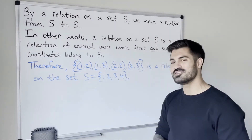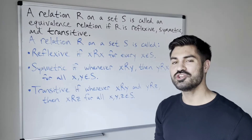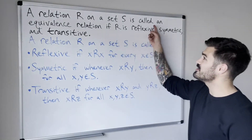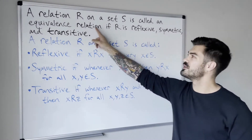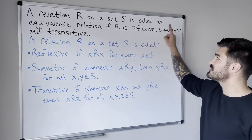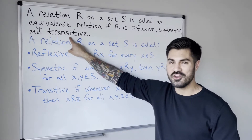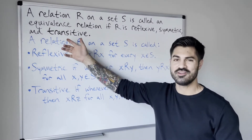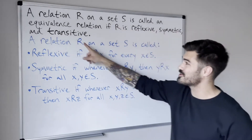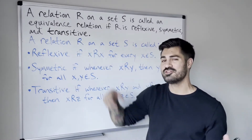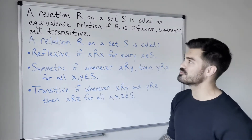Now let's get to defining equivalence relations. A relation R defined on a set S is called an equivalence relation if R is reflexive, symmetric, and transitive. So now we have to unpack what these things mean — what is reflexive, symmetric, transitive? These are all properties that describe relations.